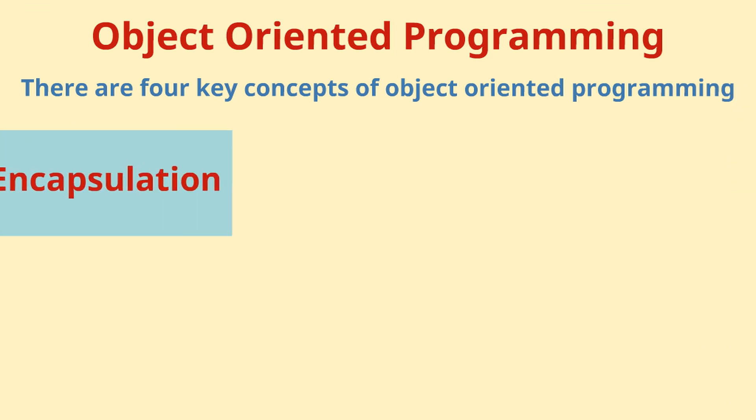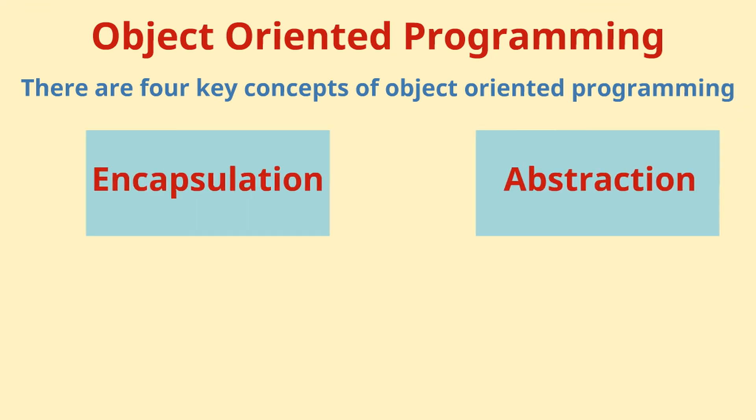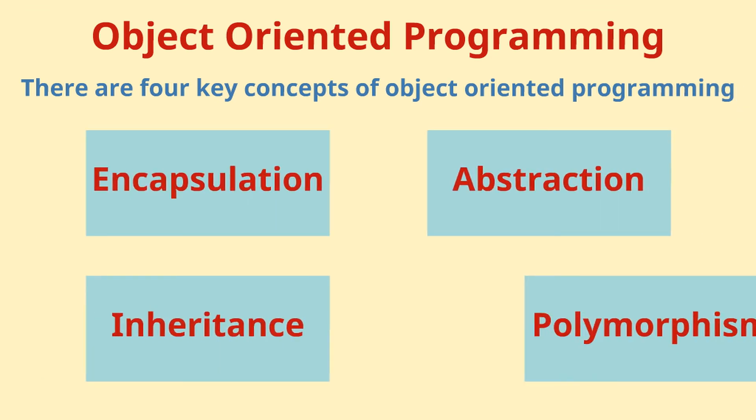There are four key concepts of object-oriented programming: encapsulation, abstraction, inheritance, and polymorphism. Let's understand each of them.